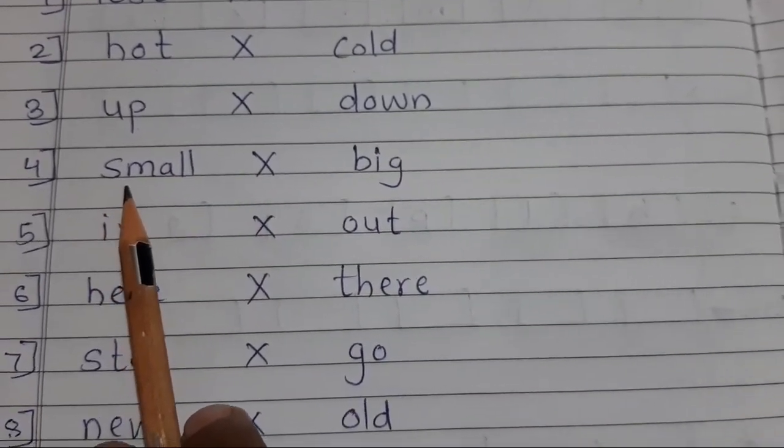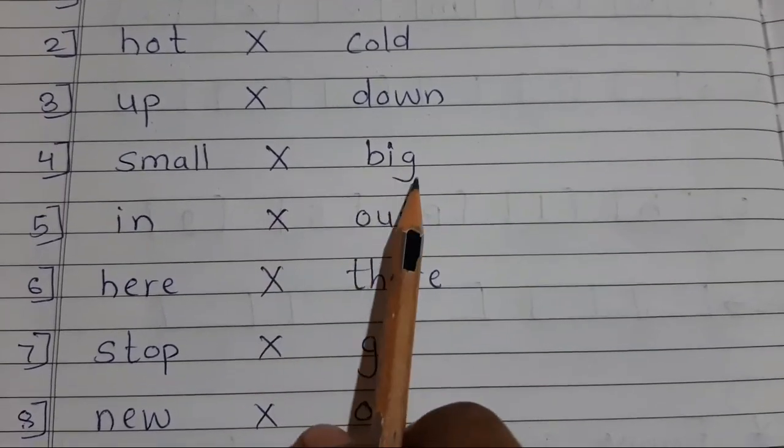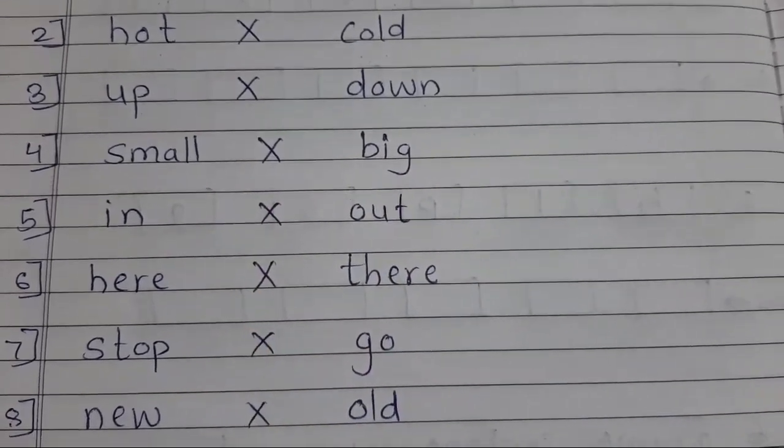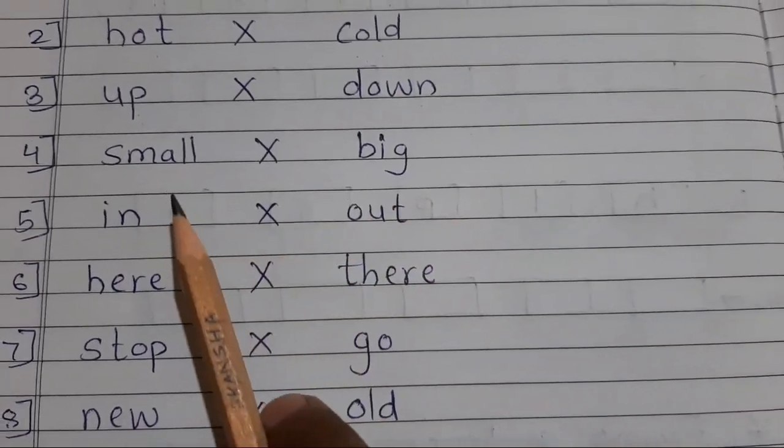Number four is S-M-A-L-L small. Opposite B-I-G big. Small means chota. Big means bada. Chota, bada. Small, big.